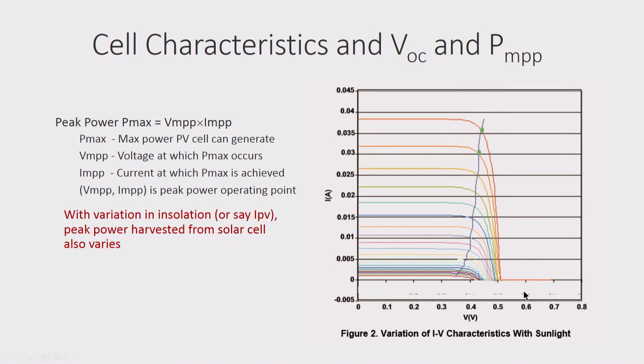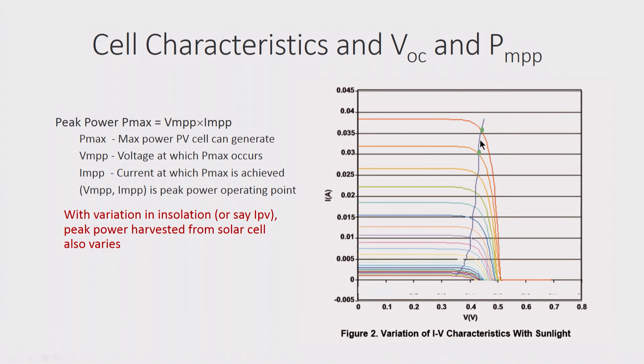And this is the current. So you actually calculate this. With variation in solar insolation, peak power harvested from the solar panel also varies. So this is the typical curve for the solar incident. This is a simple assignment, please solve this.